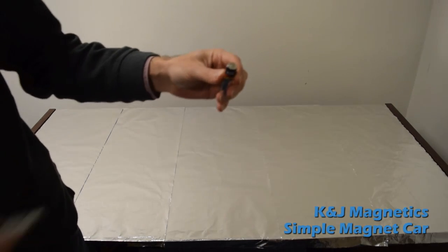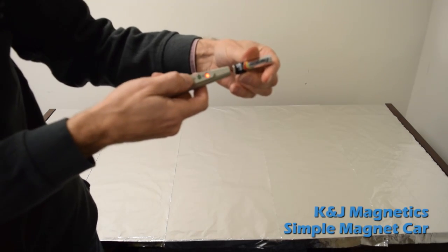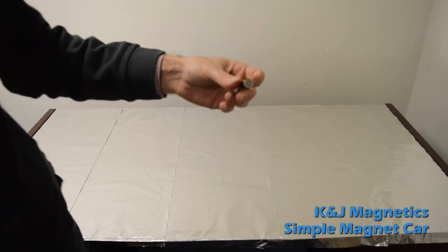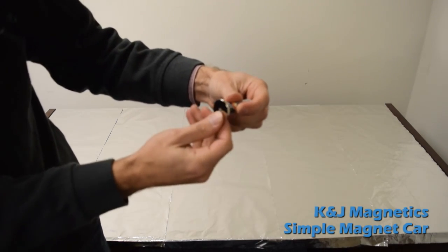And here we show the same thing, but we replace the bottom magnet with the smaller magnet. That way the car will go in circles.